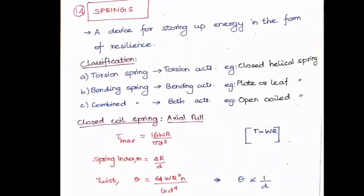The twist of the spring is denoted as θ, which equals 64WR²N / GD⁴. Here W is the axial load applied, R is the radius of the coil, N is the number of coils, G is the rigidity modulus of the material, and D is the diameter of the wire. This formula is important because questions may ask whether θ is directly proportional to R or inversely proportional to D — since it is D⁴ in the denominator, θ is inversely proportional to D to the power of 4.